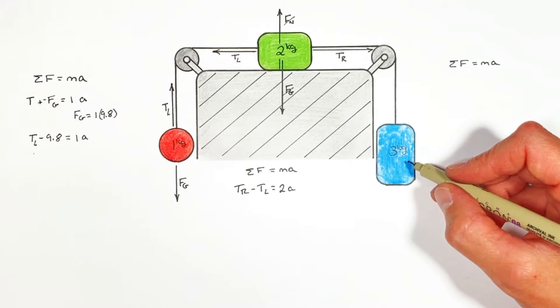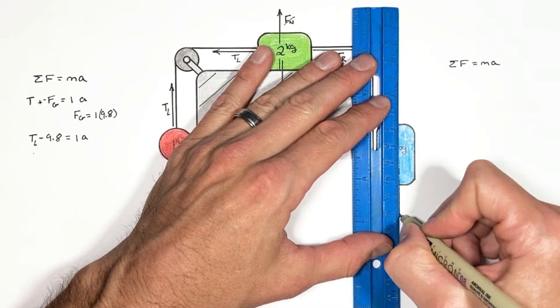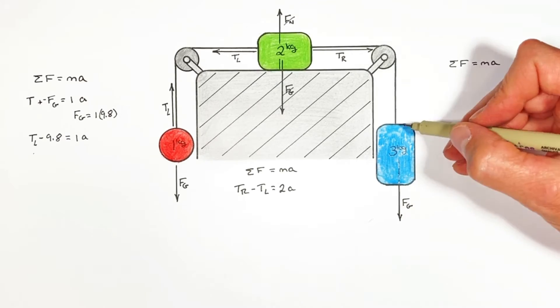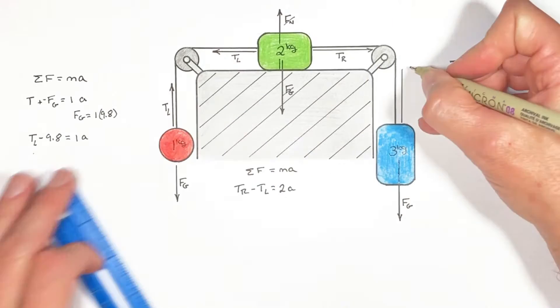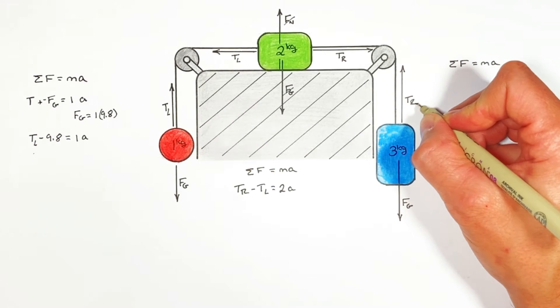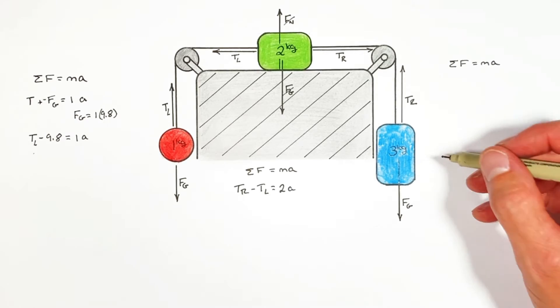Now if we look at the forces acting on this three kilogram block. There's the force downward by gravity. And there's the tension force acting upward. And there's this tension by this right string acting upward. And again this is where we have to be careful with direction.